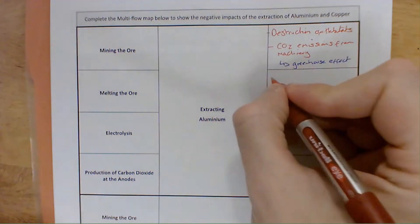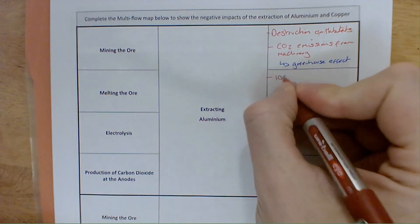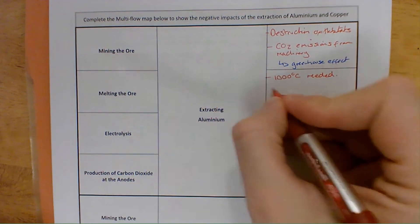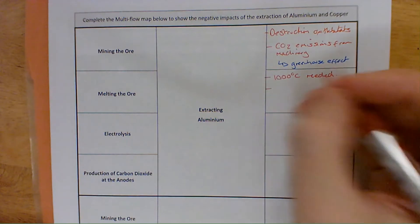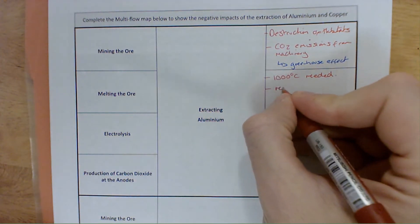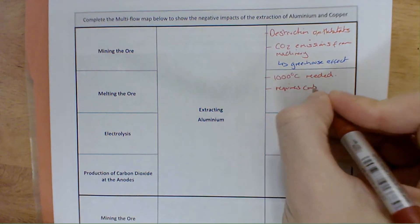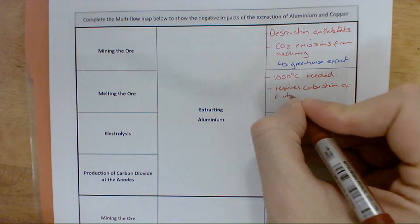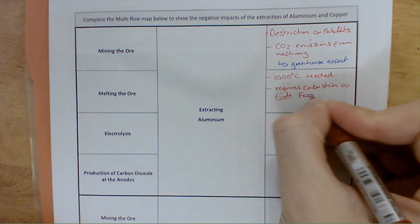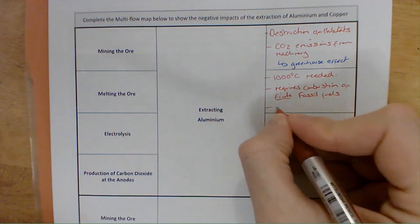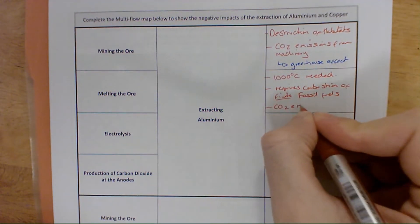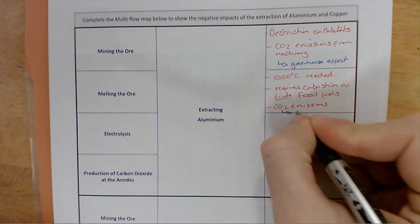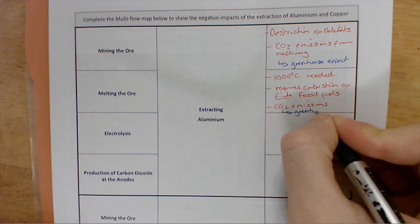Melting the ore requires around 1,000 degrees centigrade, which is most likely going to require the combustion of fossil fuels — and these are finite. The CO2 emissions associated with that are going to increase the greenhouse effect.